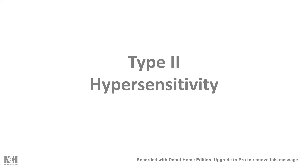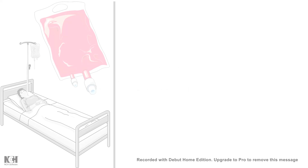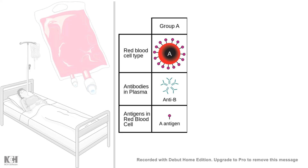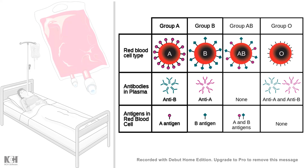One of the greatest examples of type 2 hypersensitivity is mismatched blood transfusion. There are four blood groups: A, B, AB, and O. Blood group A has anti-B antibody in the serum and A antigen on RBCs. Blood group B has B antigen on RBCs and anti-A antibody in the serum. Blood group AB has both antigens on RBC surfaces but no antibodies. Blood group O has no antigens on its surface but has both anti-A and anti-B antibodies in the serum.